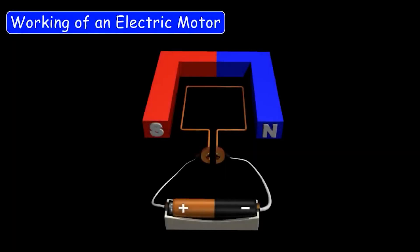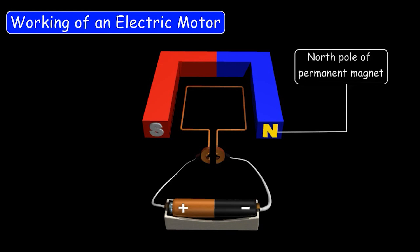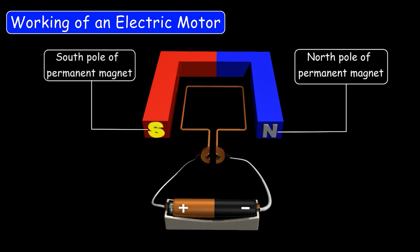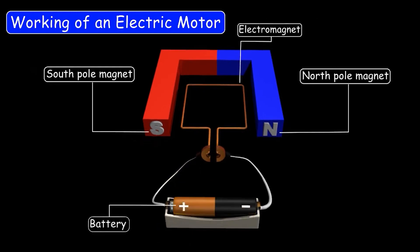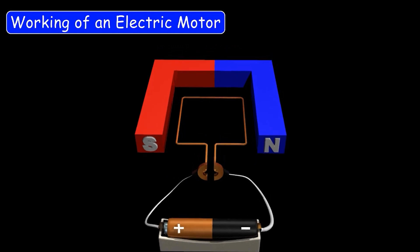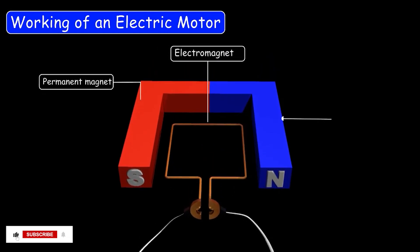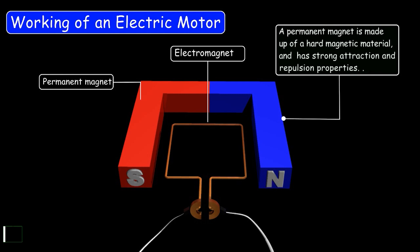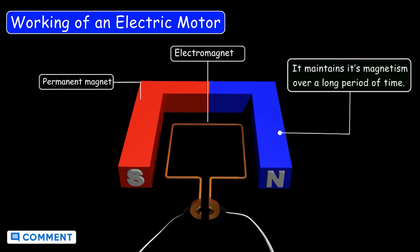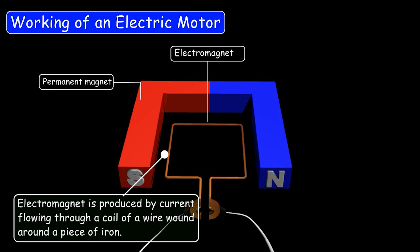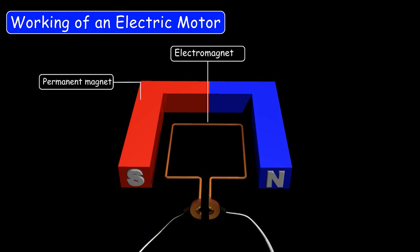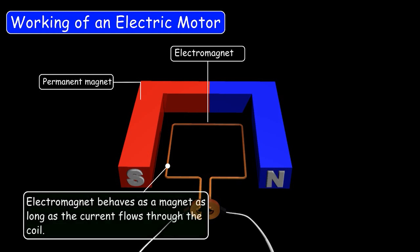Let's discuss the working of an electric motor. An electric motor consists of a permanent magnet — this is the north pole and this is the south pole of the permanent magnet. An electromagnet is a coil wrapped around an iron core, connected to a battery. A permanent magnet is made up of a hard magnetic material, has strong attraction and repulsion properties, and maintains its magnetism over a long period of time. Whereas an electromagnet is produced by current flowing through a coil of wire wound around a piece of iron.